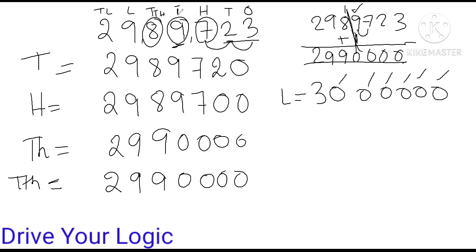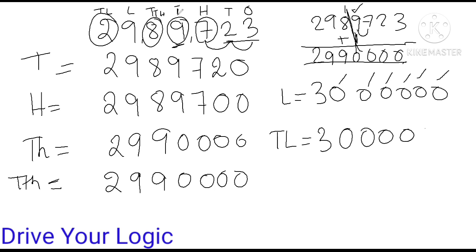Ten-lakh place: what will happen if I tell you round off to ten-lakh? Again you see — you have to round off the 2 in ten-lakhs place, but the next digit is 9, yes. Then you have to round up, so it will become 3. Your answer will be the same as for lakh: 3,000,000.